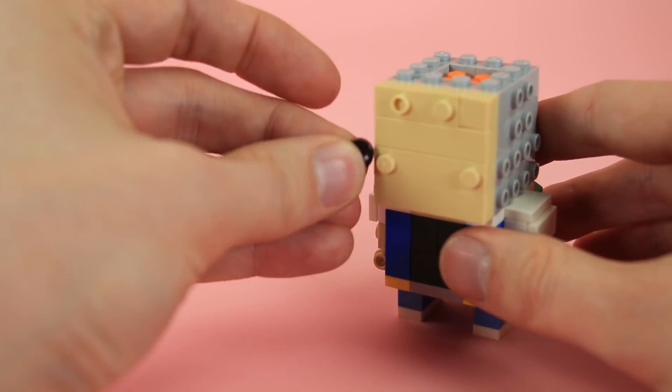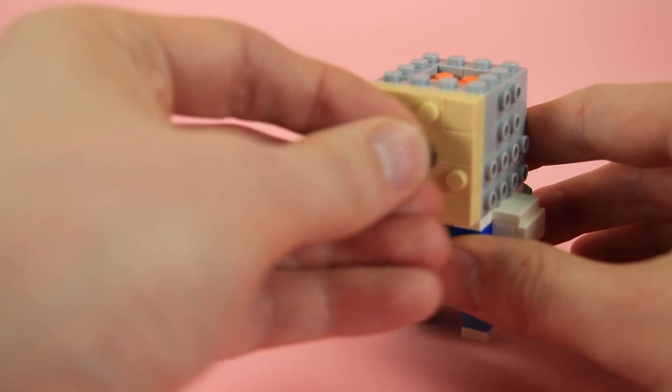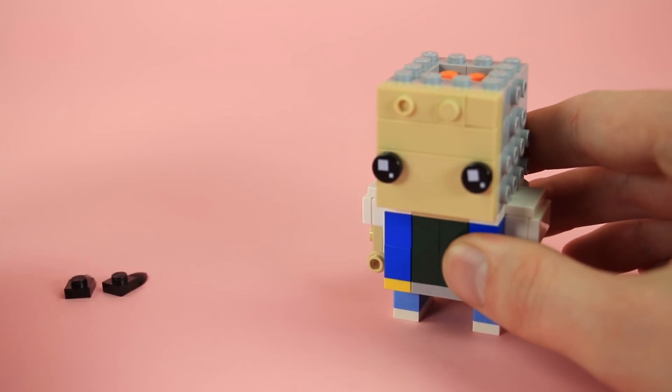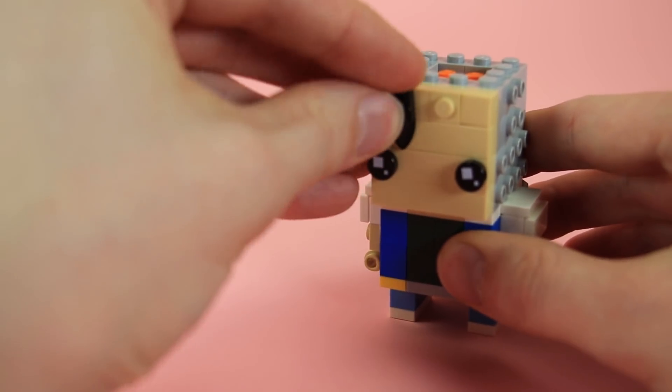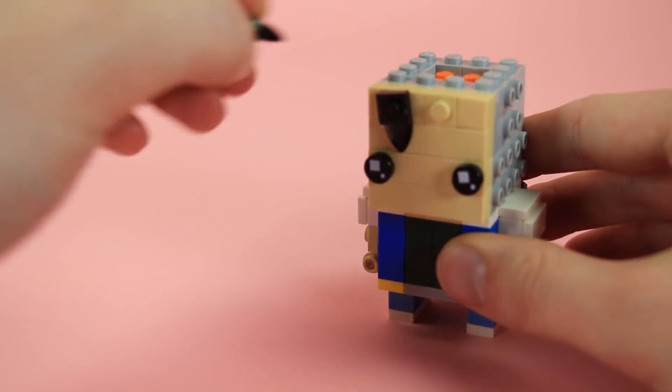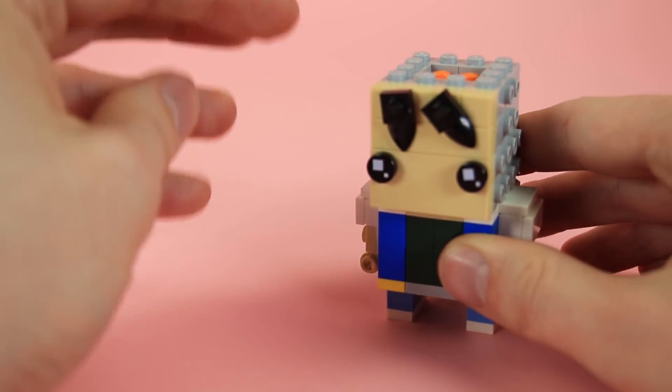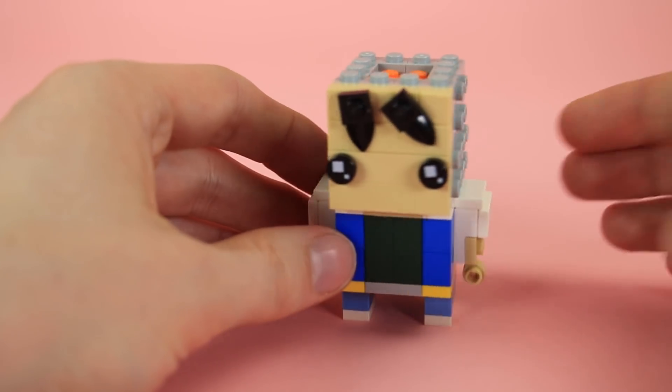Then we'll take the signature brick head eye tile and put those on the two eye spots. Then these black 1x1 tooth plates for little bits of his hair hanging down. And you know you want to angle them just so.